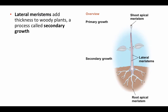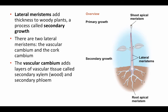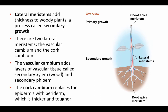There's another form of meristem that adds thickness to woody plants — a process called secondary growth, as opposed to primary growth. Primary growth elongates; secondary growth thickens. There are two lateral meristems: the vascular cambium and the cork cambium. The vascular cambium adds layers of vascular tissue called secondary xylem — what we think of as wood — and secondary phloem. The cork cambium replaces the epidermis with a layer called periderm, which is thicker and tougher — what we generally think of as bark.